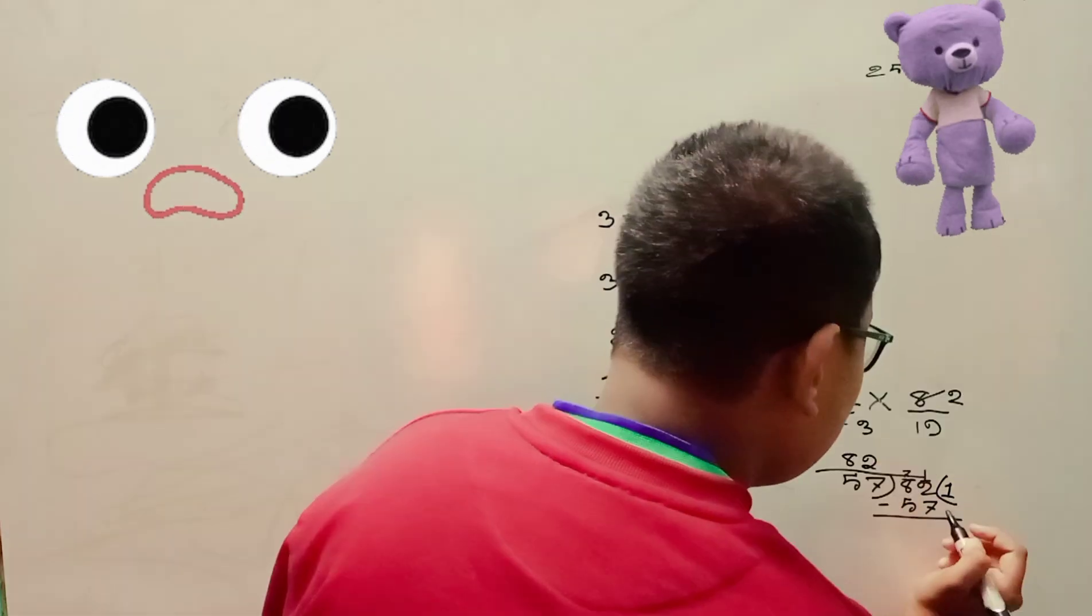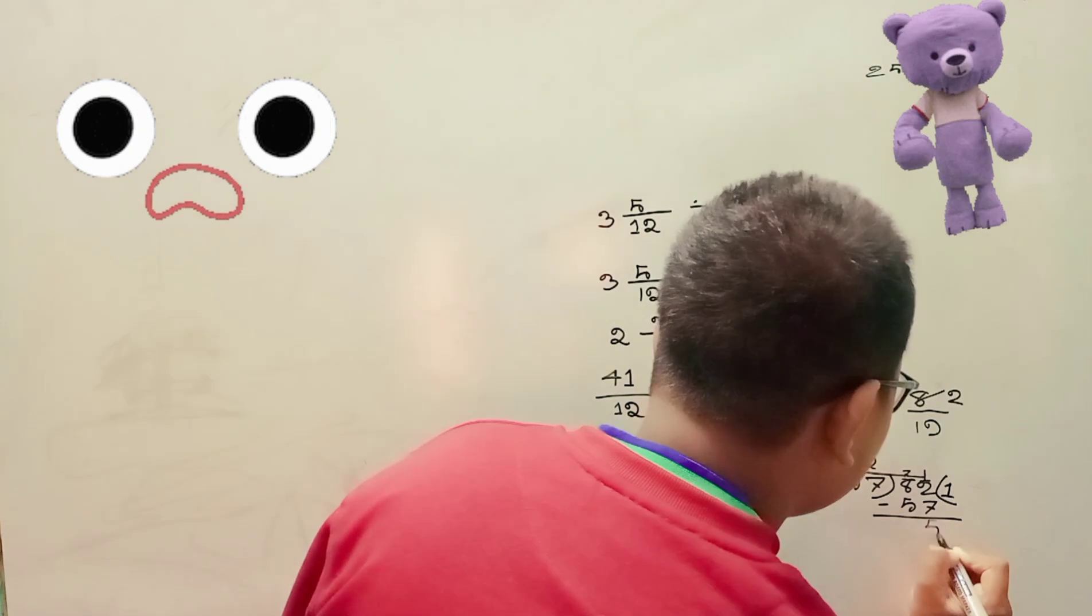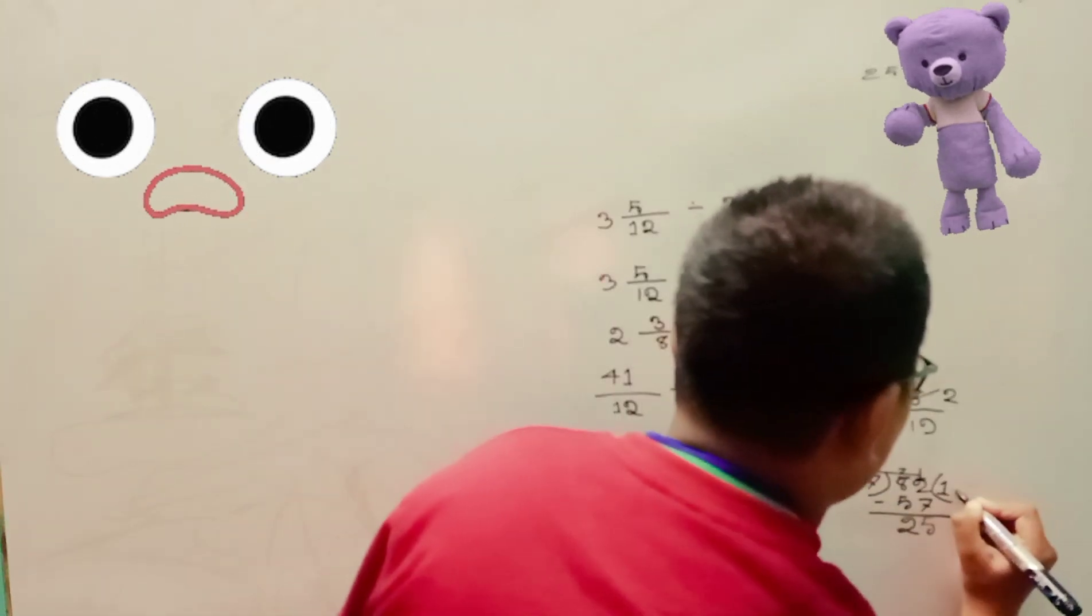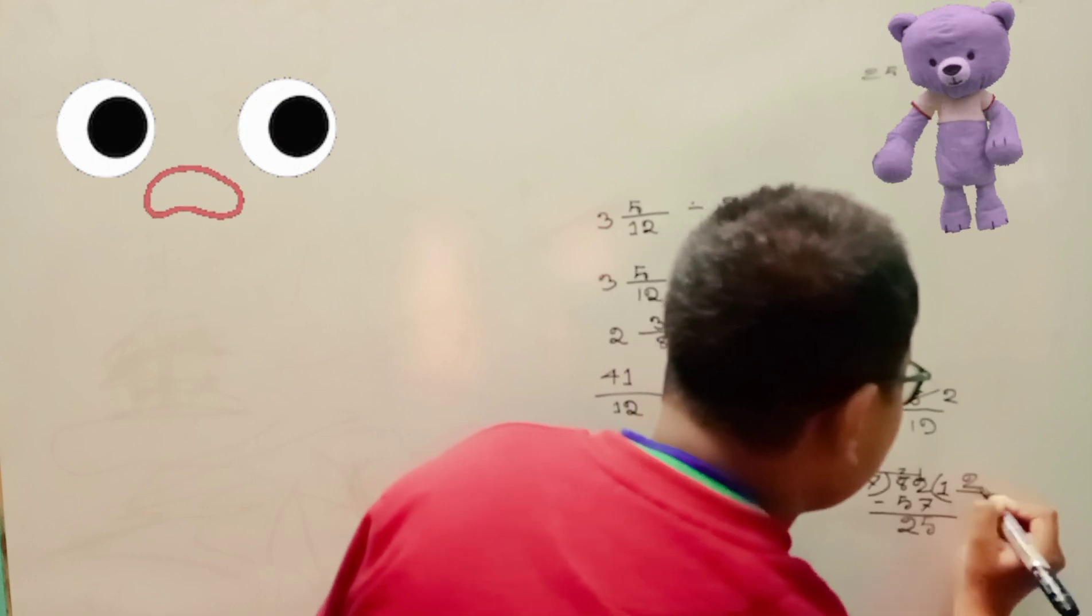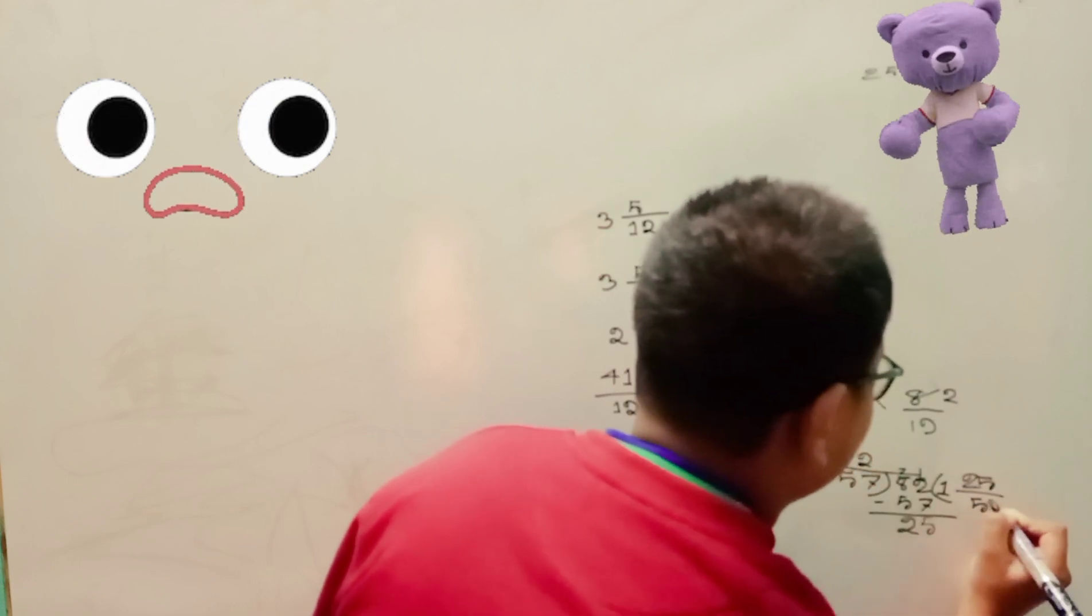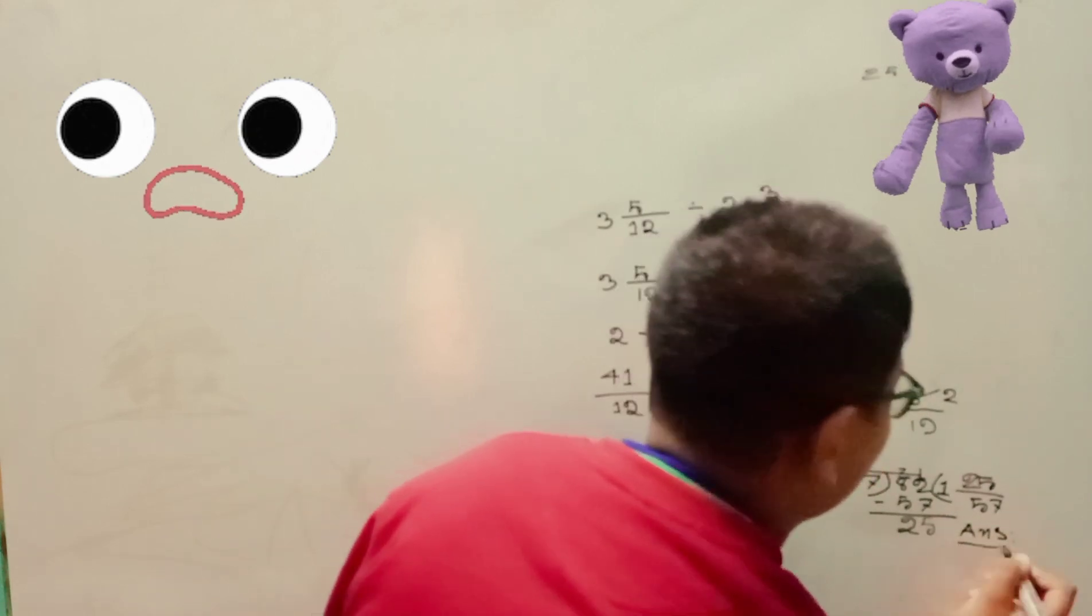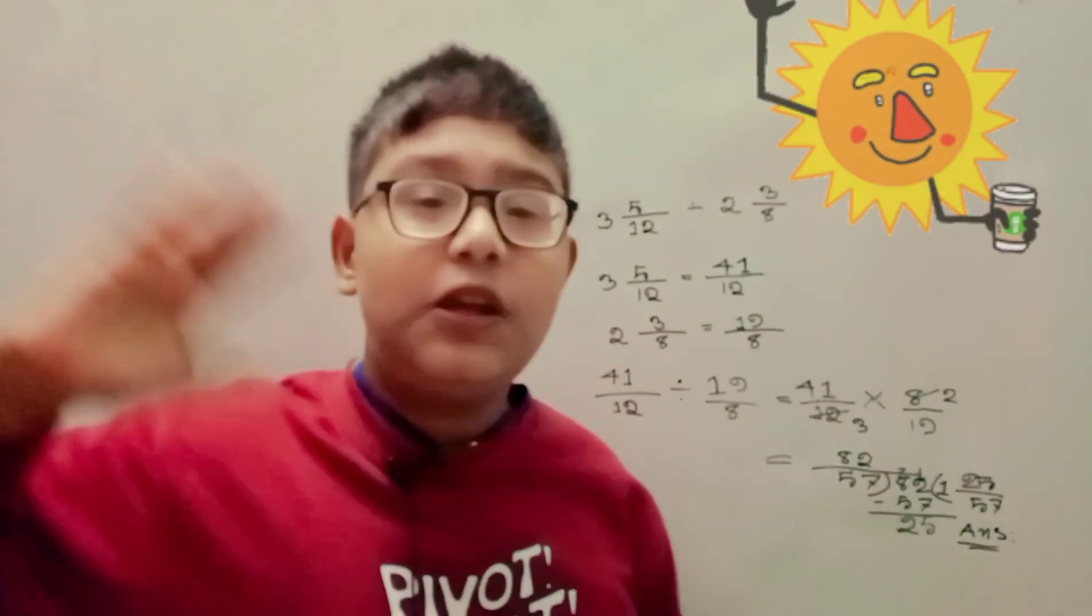82 over 57. 82 minus 57 is 25. 1 whole 25 over 57 is the answer. Thanks for watching.